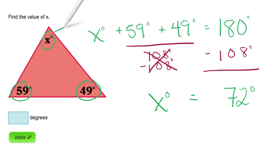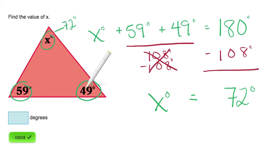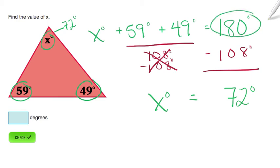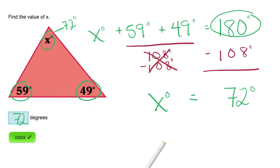That's going to be our missing value. Now if we add all three angles together, we still get a value of 180 degrees to check our work. The value of x equals 72 degrees.